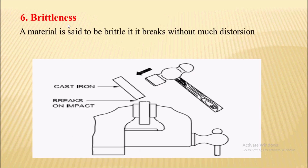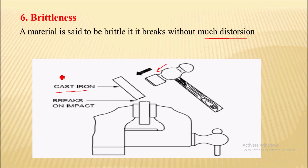Next is brittleness. A material is said to be brittle if it breaks without much deformation. The best example of a brittle material is cast iron. When a hammering force is applied onto cast iron, it will break easily without much deformation. Another example of a brittle material is glass.